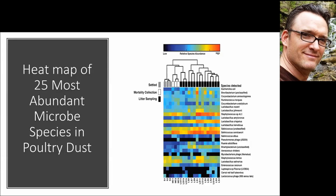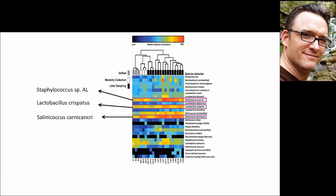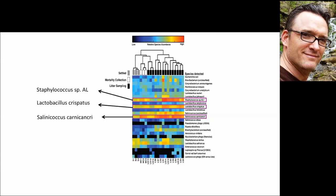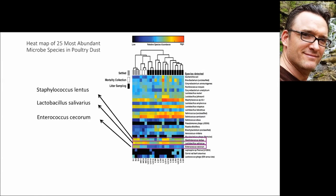We ranked the 25 most abundant microbes in the poultry dust. Based on the red color, you can see the highest concentration — this is relative abundance, so it ranks them rather than giving specific concentration units. Salinococcus, Lactobacillus, and Staphylococcus emerged as among the most common organisms found in this inhalable dust sample. Lactobacillus is a probiotic, and Staphylococcus is found on skin. We also identified more specific organisms at the species level: Staphylococcus lantus, Lactobacillus, and Enterococcus. Interestingly, we also found quite a bit of phage virus in the top 25, which is a virus that infects microorganisms or bacteria.